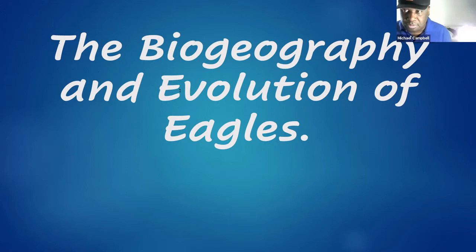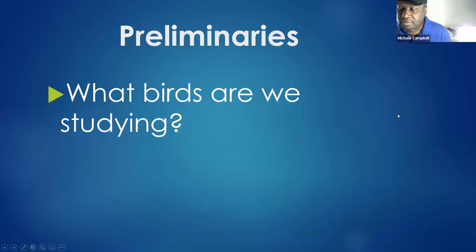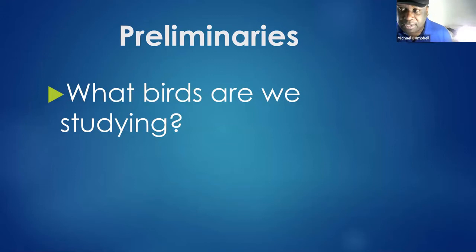I'll start with what birds we are studying — in other words, what are eagles? Eagles overlap with many species like hawks, kites, buzzards, and even vultures. So we have to know what we mean by an eagle. Right now the jury is out on what an eagle is. Eagles vary in so many physical and behavioral features that not everybody agrees on what an eagle is.